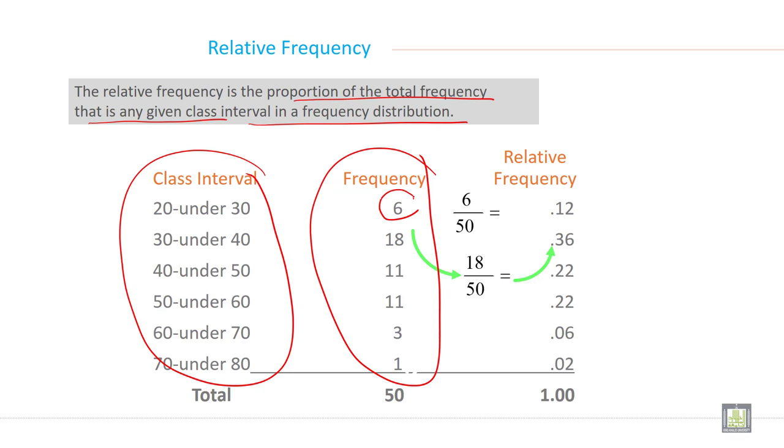Just take the individual frequency 6 and divided by 50. 6 divided by 50 so it is 0.12. For example relative frequency of second class, so 18 divided by 50 so it is 0.36. 11 divided by 50 so it is 0.22. Again 11 divided by 50 so it is 0.22.